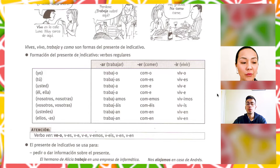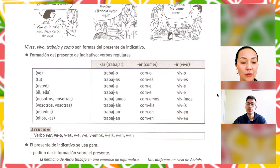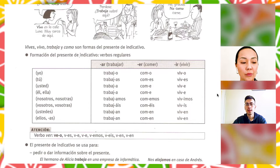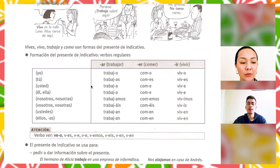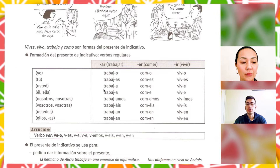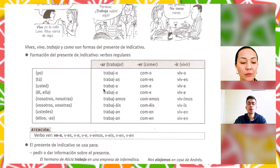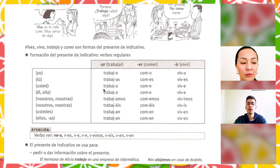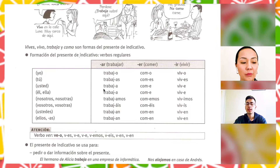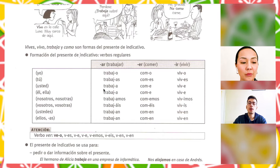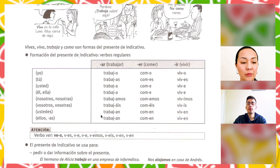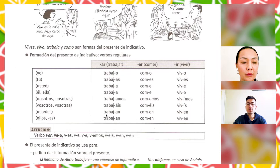Yo trabajo. Tú trabajas. Usted, él, ella trabaja — here we have the same for both. Nosotros, nosotras trabajamos. Vosotros, vosotras trabajáis. Ustedes, ellos, ellas trabajan — here we also have the same form for ustedes, ellos, ellas.